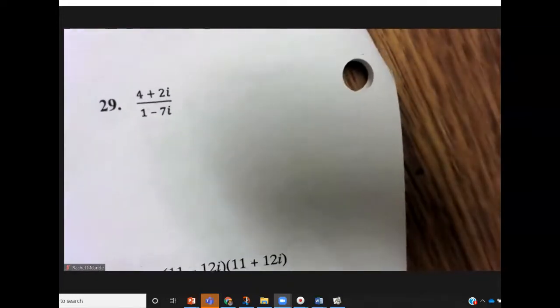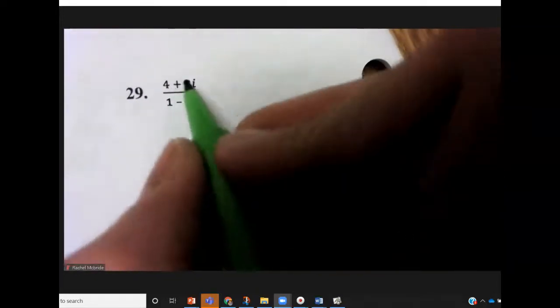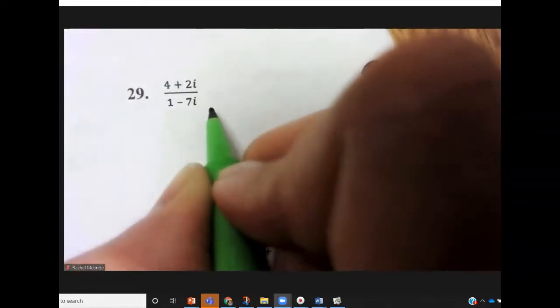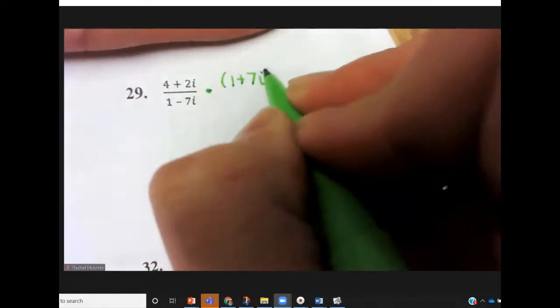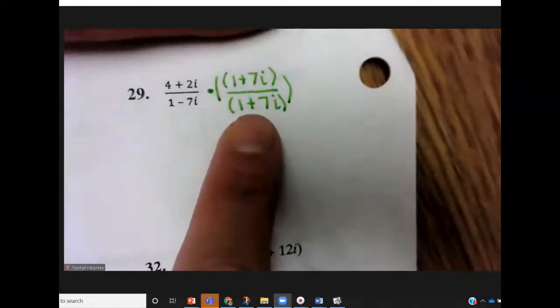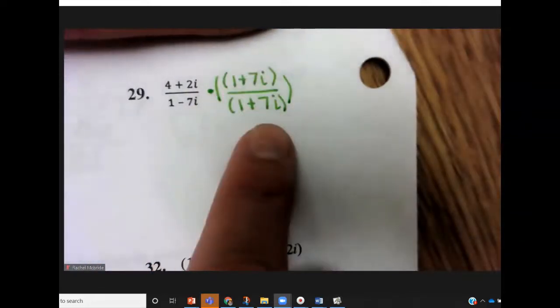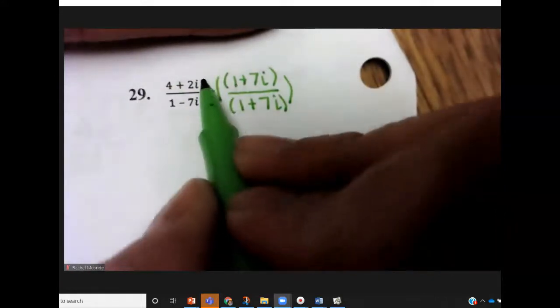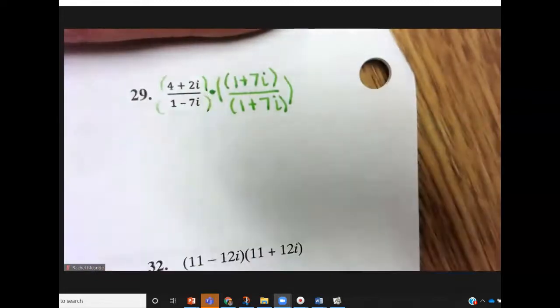Number 29. This is an example where you have to rationalize the denominator using the complex conjugate. So we're going to multiply the top and bottom by 1 plus 7i. Because remember, you only change the value of the i. Which means I need to foil top and bottom.